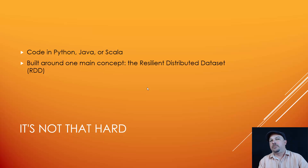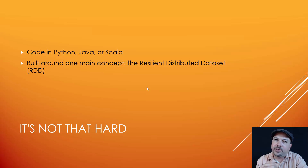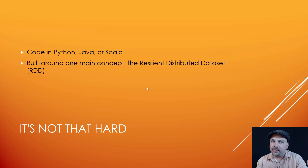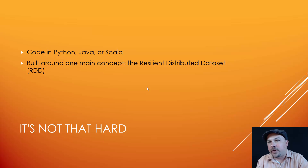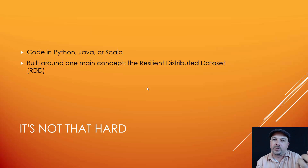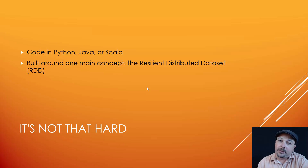Spark is really based around one main concept: the resilient distributed dataset — RDD. This is basically an abstraction over a giant set of data. You take these RDDs and you transform them and perform actions on them, and that's really all there is to programming in Spark. It's just a matter of figuring out the right strategy to get from input data to a desired set of results, and the actual code in between is generally surprisingly simple.